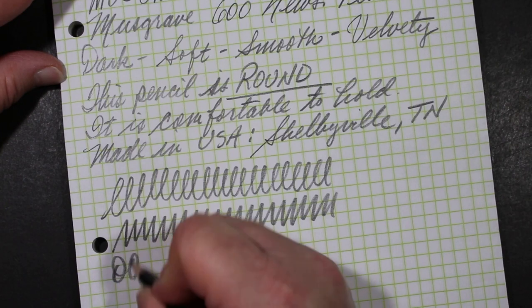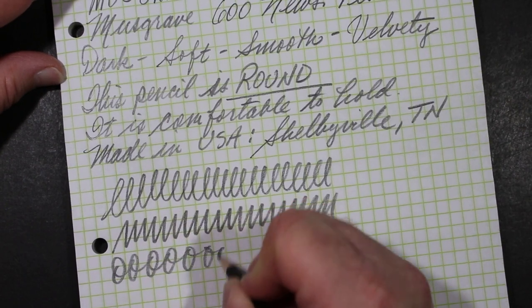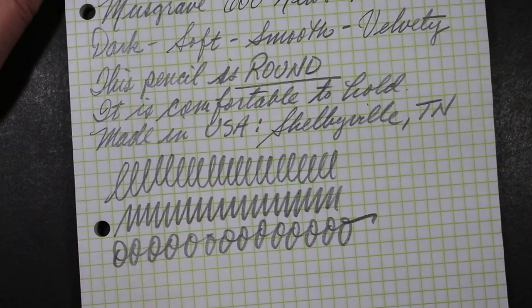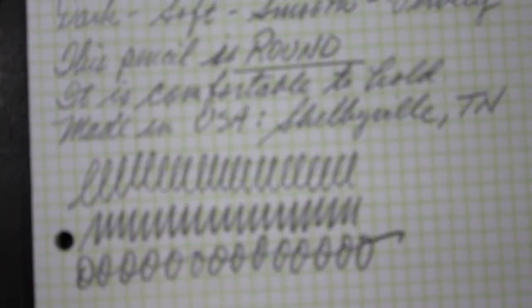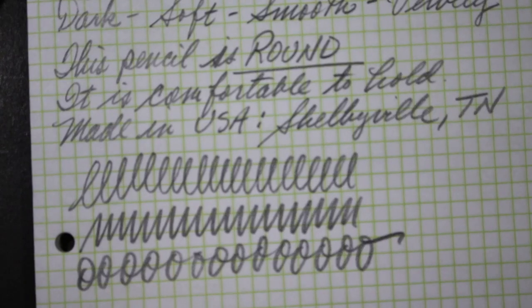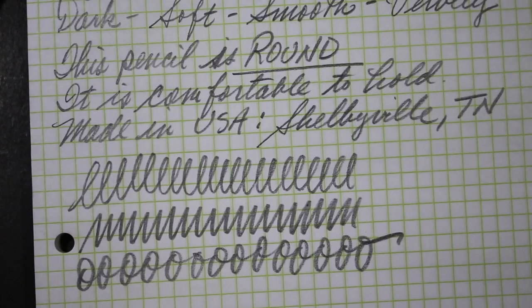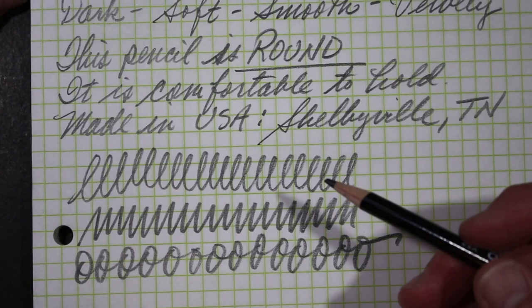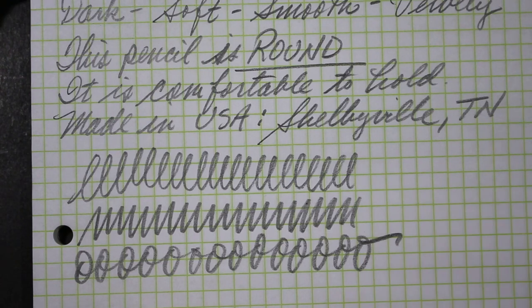When not fully sharpened the line gets broader and broader as you can see here look how thick that line is. I call this sort of the sharpie of pencils because of that and you can see the tip here.